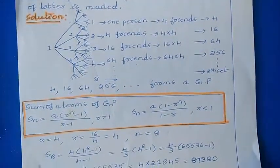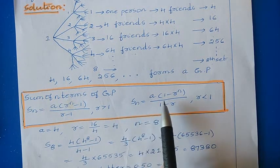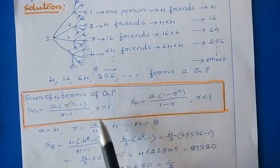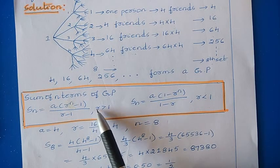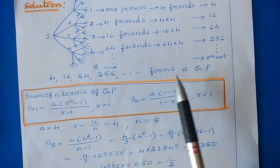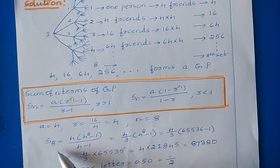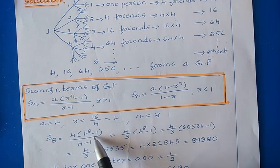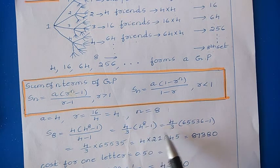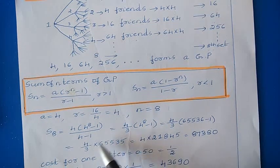In geometric progression, to find the sum we have the formula for r > 1. Here r = 4, which is greater than 1. Substituting: a = 4, r = 4, n = 8. S₈ = 4 × (4⁸ − 1) ÷ (4 − 1) = (4 ÷ 3) × (4⁸ − 1). Since 4⁸ = 65536, this gives (4 ÷ 3) × 65535.